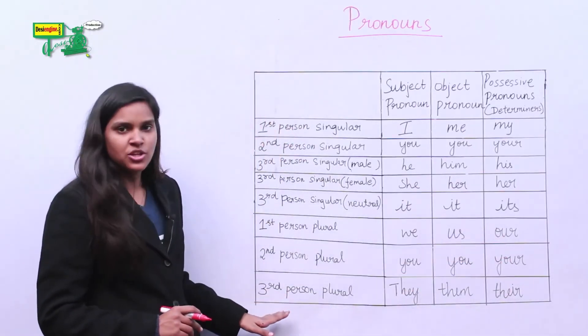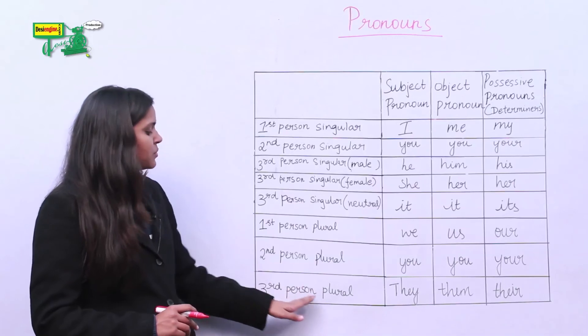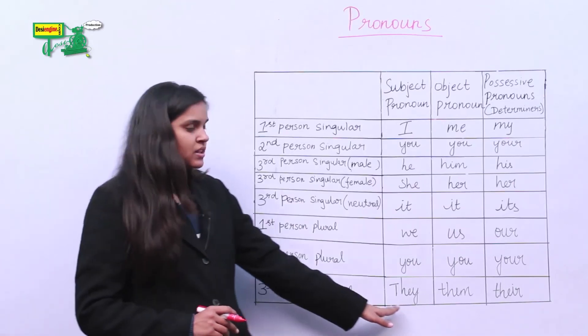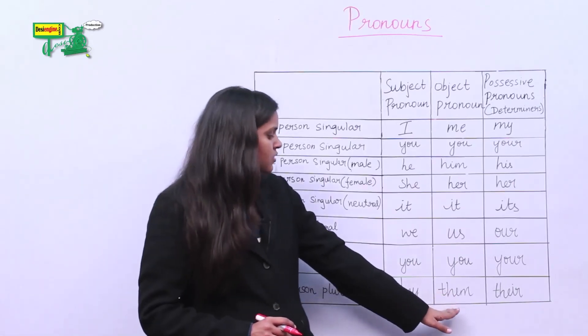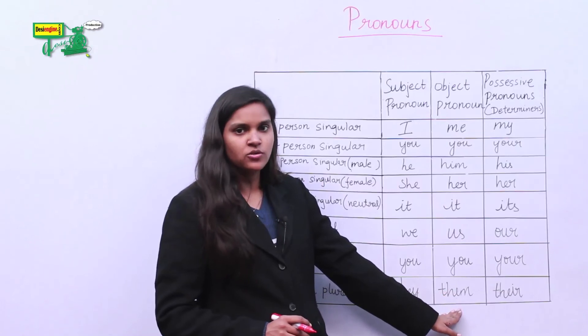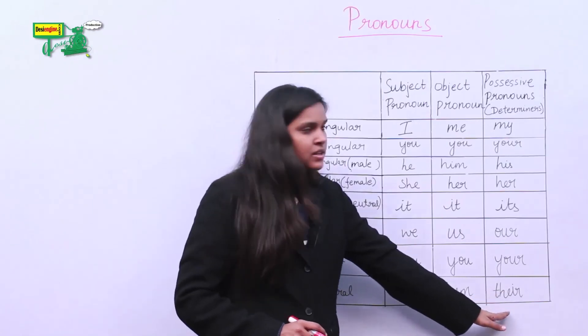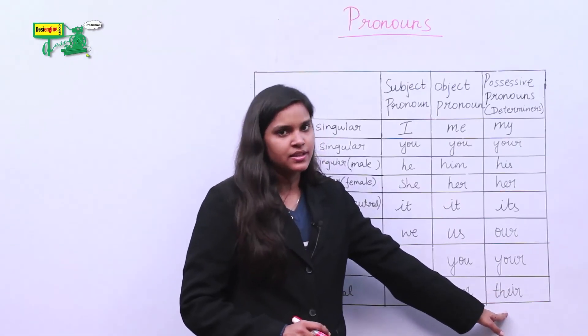The subject pronoun of third person plural is they, the object pronoun is them, and the possessive pronoun is their.